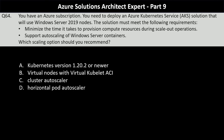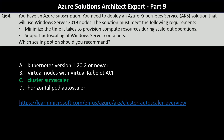Cluster autoscaler is the most suitable option. It automatically adds or removes nodes in the AKS cluster based on workload demands, minimizing the time to provision new compute resources by scaling the entire node pool, including Windows Server nodes, when needed. Virtual nodes with virtual kubelet ACI cannot be chosen here, as virtual nodes only support Linux nodes, whereas this question requires autoscaling for Windows nodes. There is a reference link for further reading on why cluster autoscaler is the correct answer.